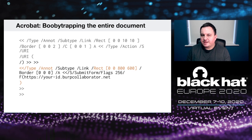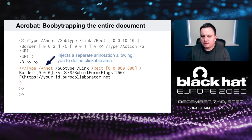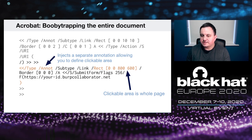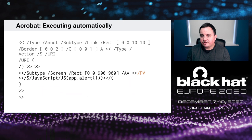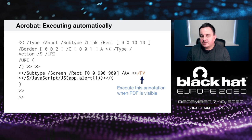I found a way to booby trap the entire PDF document so that no matter where the victim clicks on the page, the JavaScript or submit form action will be called. I inject a separate annotation and specify the rect dictionary key — the X and Y coordinate plus width and height — to make the entire page clickable. Then I use the existing parenthesis to complete the injection. You can also execute automatically on Acrobat using the PV dictionary key; once specified, the annotation will execute automatically when the page is loaded.